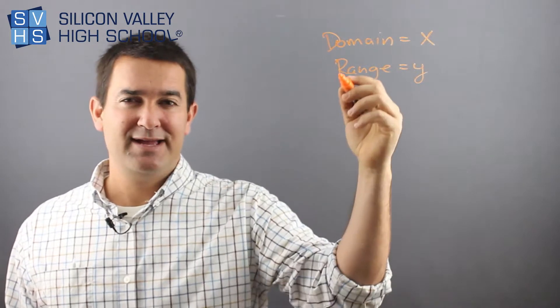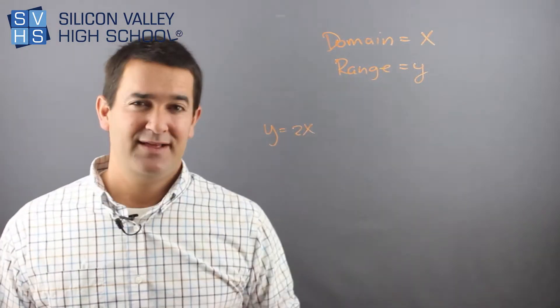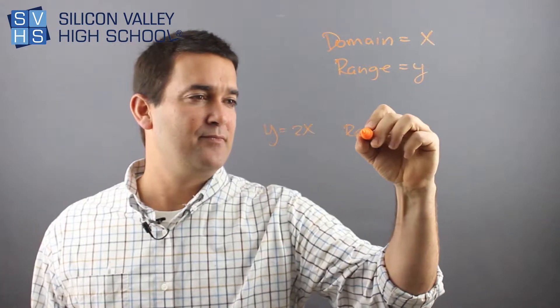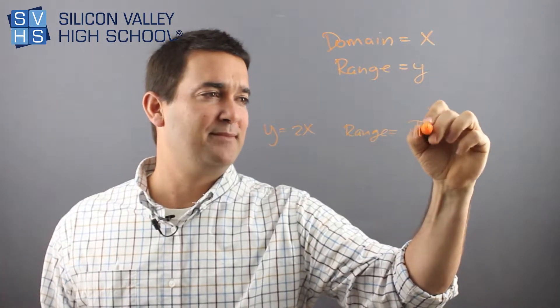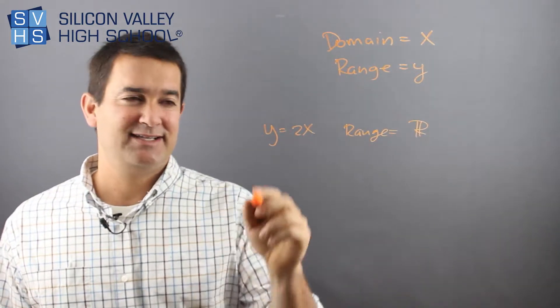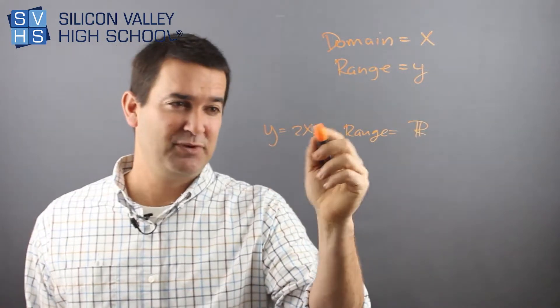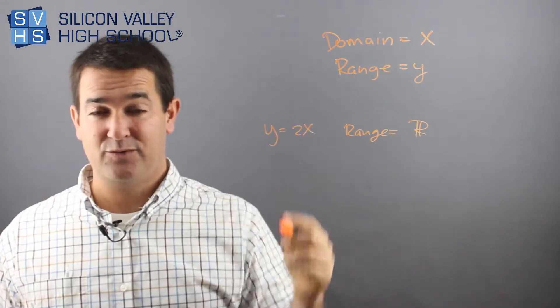So as an example, here's one where you'll say, okay, here's a function, Y equals 2X. The range is going to be all real numbers. Remember that little double R thing is the cool way to write all real numbers. And the reason is, can I get a negative? Yes. I can totally get a negative Y. I just put in a negative X, two times a negative, it would work.